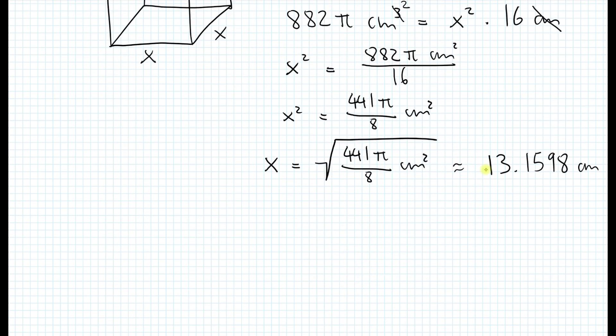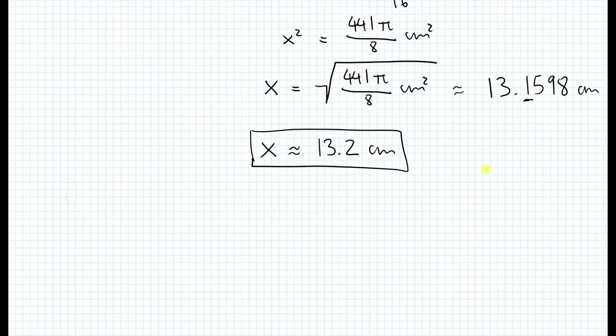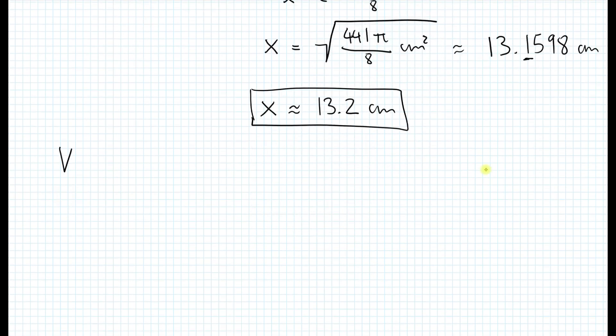Now if we go back to the original problem it says here round to the nearest tenth of a centimeter. What does that mean? That we want to leave only one digit here after the decimal. So we just write that x is approximately equal to 13.2 centimeters. So that is the answer. So what I will do is to also double check if this makes sense. How would you double check this? So what we can say is volume of the rectangular prism, we can actually calculate the volume and see if we get approximately the same answer as the volume of the cylinder.